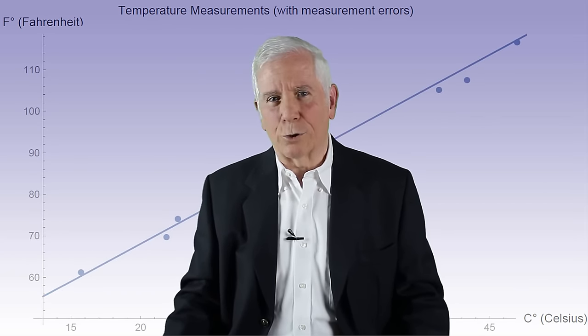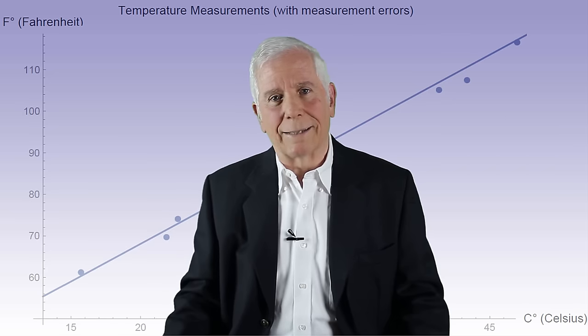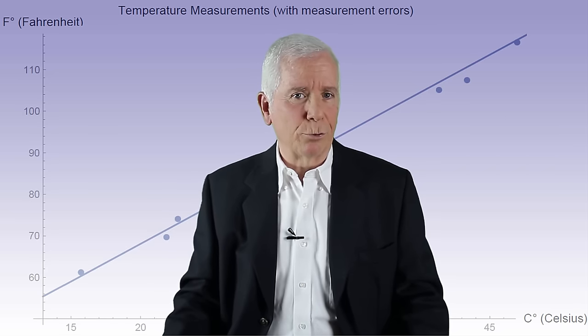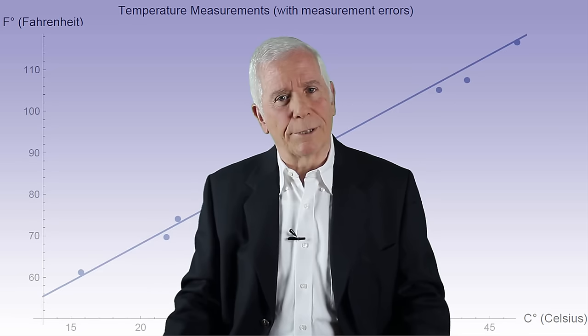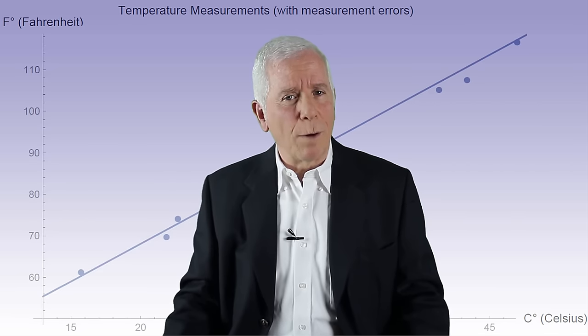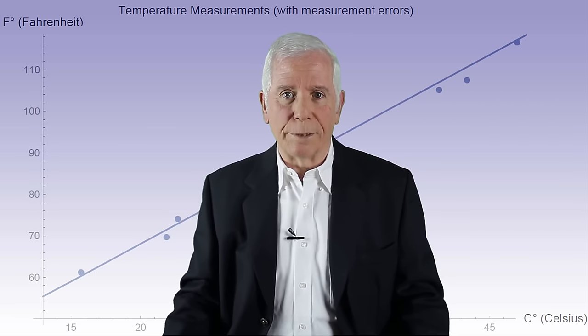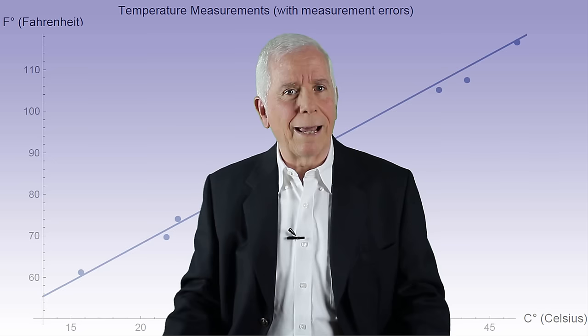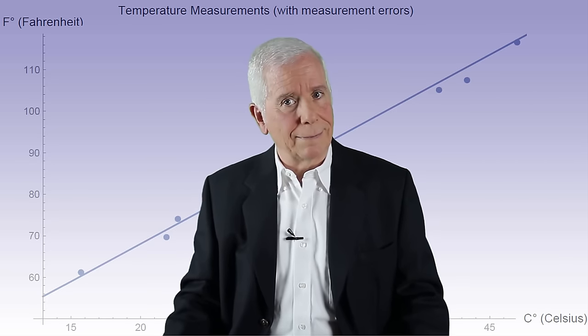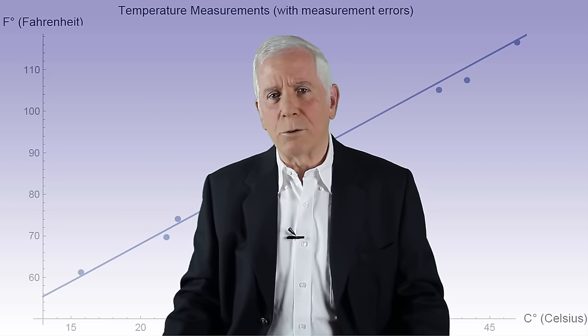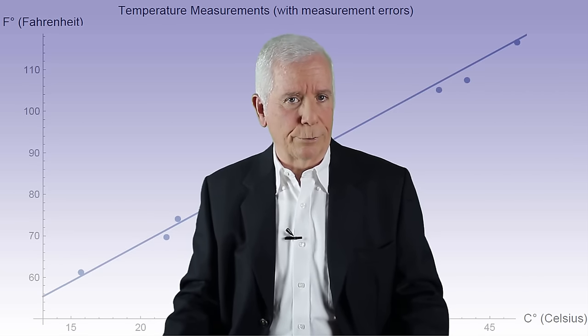The question of whether the points are close enough to a straight line so that we can state that there is a linear relationship between the two scales, between the two axes, cannot be answered arbitrarily. It requires using statistical analysis that will determine in an objective manner that indeed a linear relationship between the two axes does exist. In other words, that there is a statistically significant linear association.